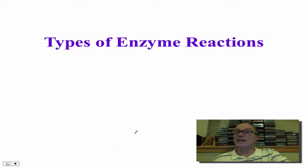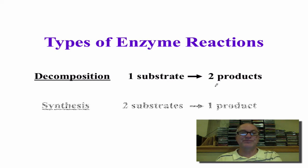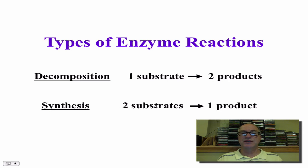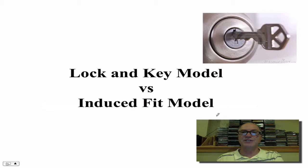Let's take a look at the types of enzyme reactions. We already saw that hydrogen peroxide was decomposed — one larger substrate was broken down into two smaller products. That's a decomposition reaction. The opposite, where you take two smaller substrates and bond them together to make a larger product, is a synthesis reaction, where you are synthesizing or producing a larger molecule. Now, there are two models usually discussed with enzymes: the lock and key model, and the induced fit model.